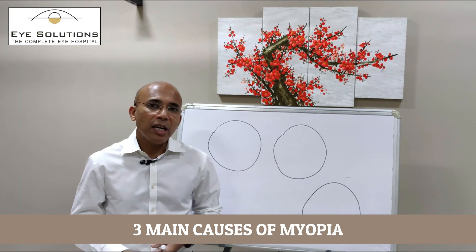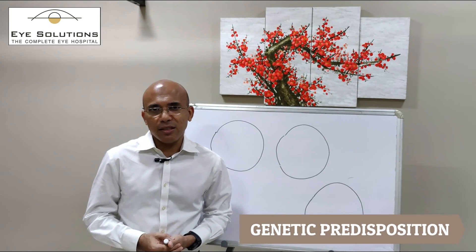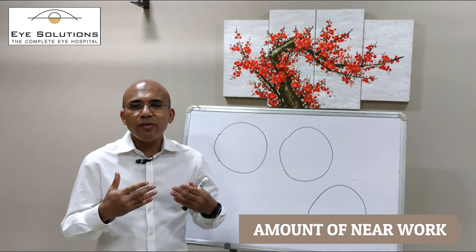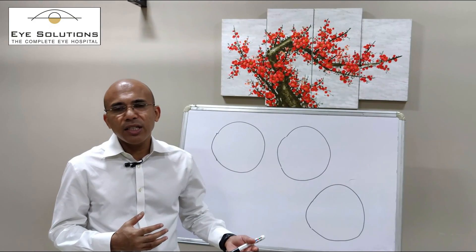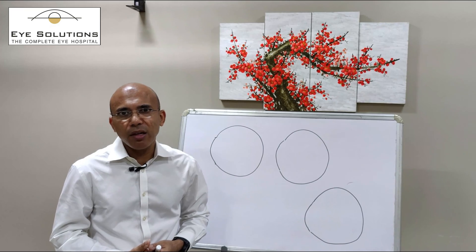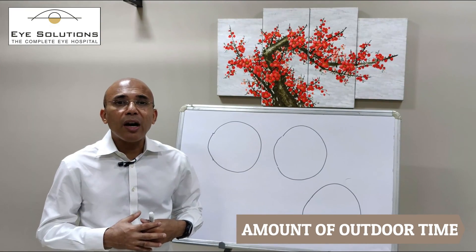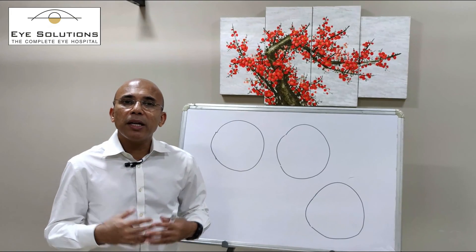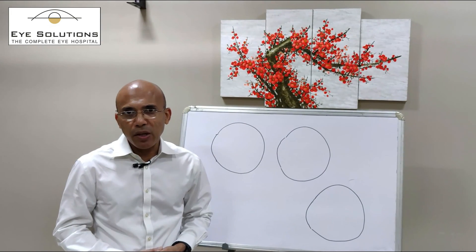There are three main causes of myopia, apart from a few others. The first is genetics, which you can't really do much about. The second is the amount of near activity that you do — the more near activity, the higher the chance that you will develop myopia. And the third is the amount of outdoor activity: the more time you spend outdoors, the lesser the chance of developing myopia.